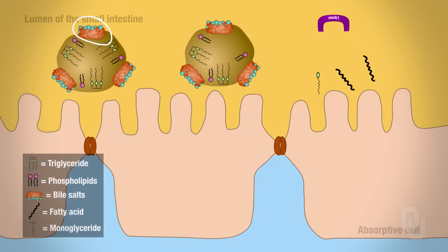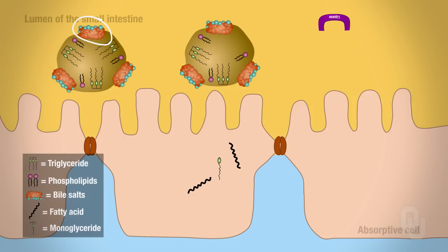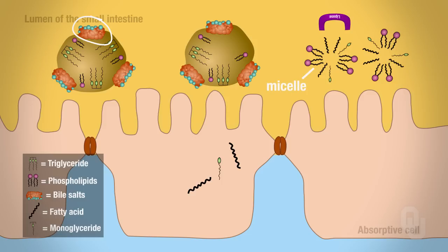The fatty acid products are lipophilic, so fatty acids can freely diffuse across the epithelial cell. Once inside the cell, their ultimate goal is to diffuse into the blood — to be absorbed. Not all fatty acids are absorbed right away. Some that do not freely diffuse will aggregate with bile salts, cholesterol, and other lipid-soluble substances. This aggregation is called a micelle. As the body absorbs fatty acids and needs more, the micelle can release additional products to be absorbed.